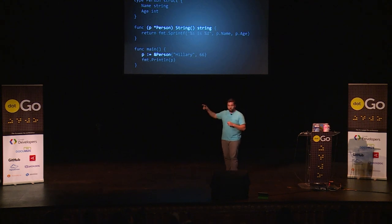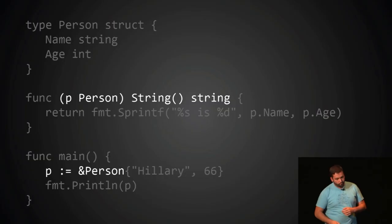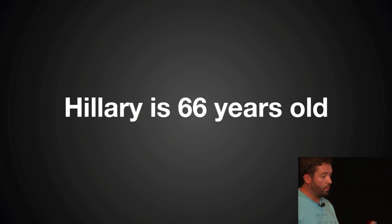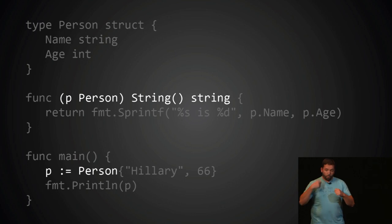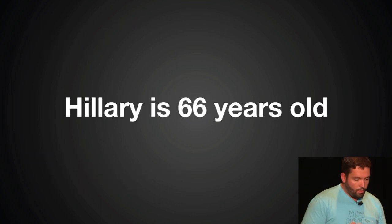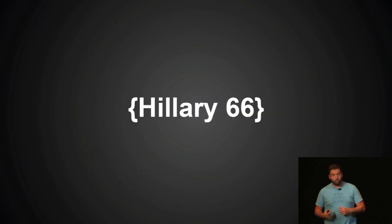The first part is the obvious one: the method set of an interface is all the methods in that interface. The last one says that if you have a pointer, the method set for that type is all the methods declared on the pointer, but also all the methods declared on the value itself. So in this code, we're passing a pointer to person P to println, and println will check if that pointer to person's method set includes the string method — and it does. This will print 'Hillary, 66 years old'. But if we define our method on the value itself, this will still work, because the method set includes both. In the opposite way, though, it doesn't work — the method set of a type T is just the methods defined on T, not the methods defined on the pointer.